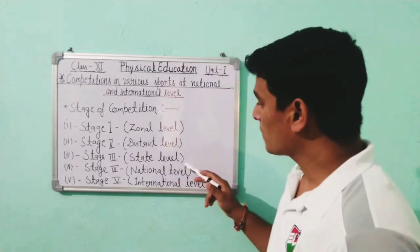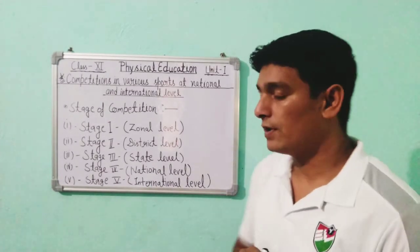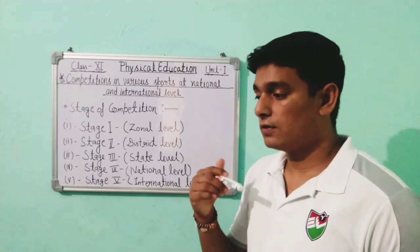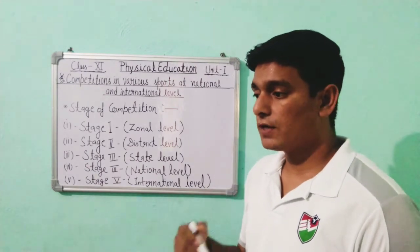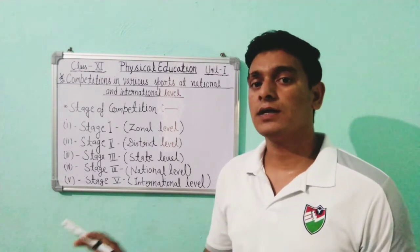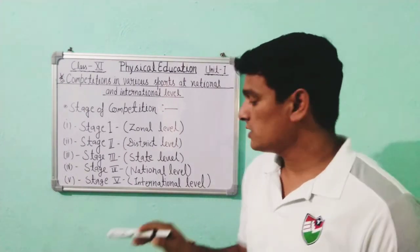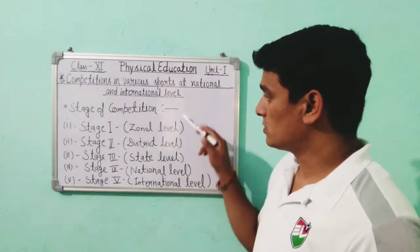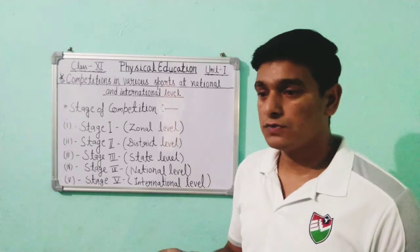Stage five is the International level. At the international level, different nations represent their country. For example, in the Cricket World Cup, we represent India — not any particular state. To recap, competitions go from Zonal level, to District level, to State level, to National level, and finally to International level.